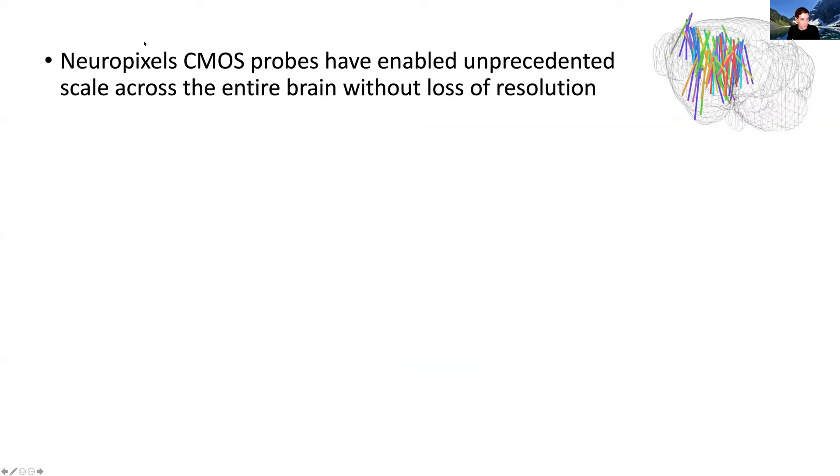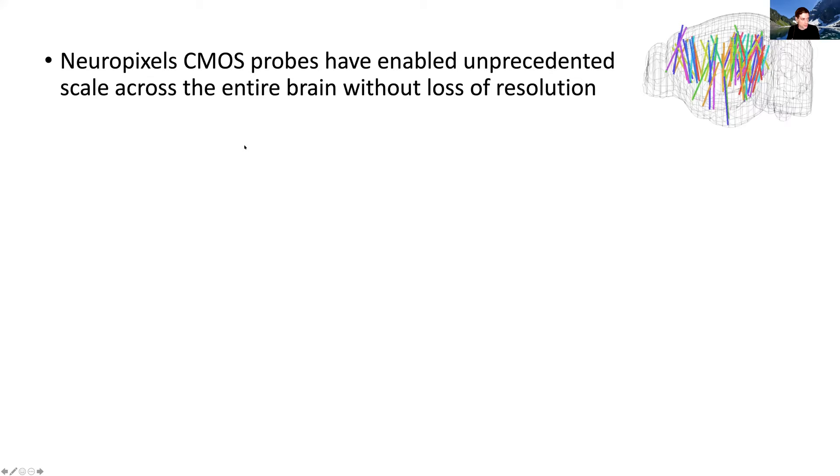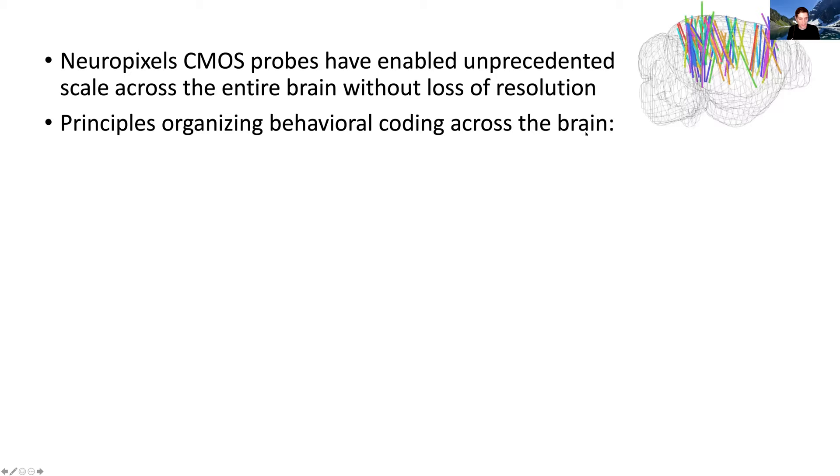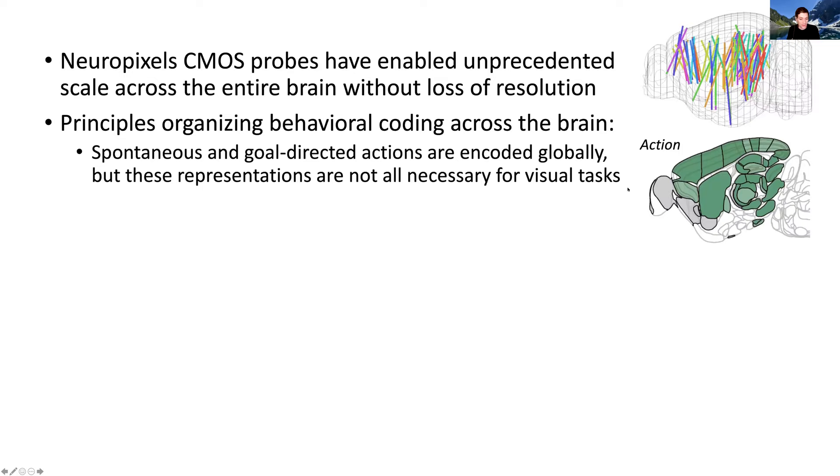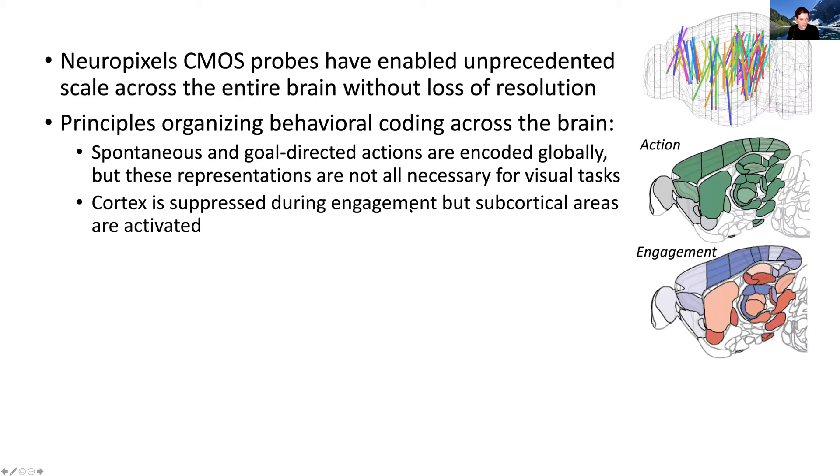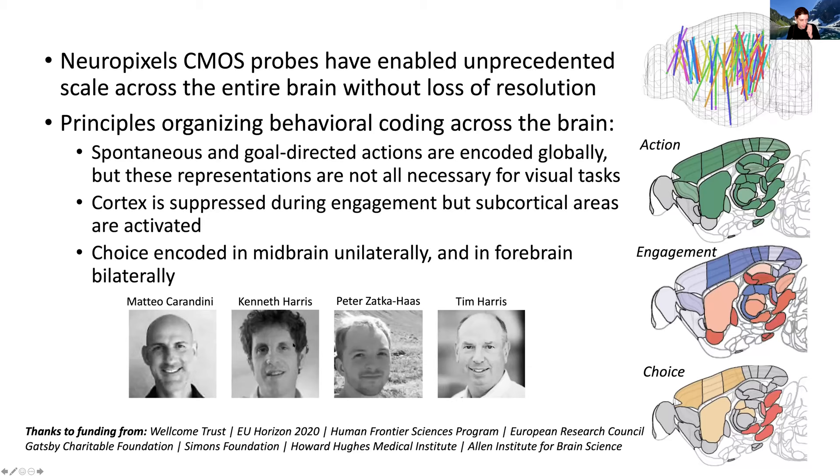Just to wrap up, so as you've been hearing, these Neuropixels CMOS probes have really enabled unprecedented scale across the entire brain without losing that single spike, single neuron resolution. And in this work, we identified some principles that organize behavioral coding across the brain, and I didn't tell you about all of these, but I'm going to summarize them here and you can read the paper if you're interested in learning more. Spontaneous and goal directed actions are encoded globally, but these representations are not all necessary for visual tasks. I didn't tell you about the engagement, but cortex is suppressed during engagement and subcortical areas are activated. Choice is encoded in a restricted set of regions in the forebrain and the midbrain, and it's encoded differently in those two areas. So I didn't tell you about those. That's just a teaser. You can go check out the paper if you want. So thanks very much to Mateo and Kenneth, my two supervisors in this work. Peter Zakajas was a super talented graduate student who worked with me on most aspects of this project. And definitely thanks to Tim and to iMac and all the members of the Neuropixels Consortium, and I'm happy to take any questions.